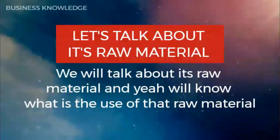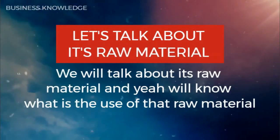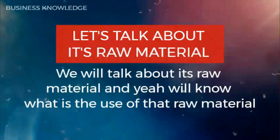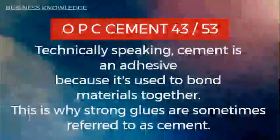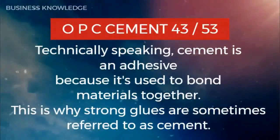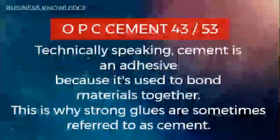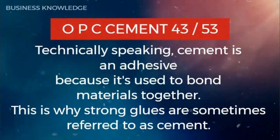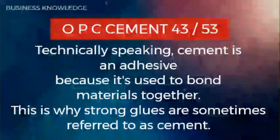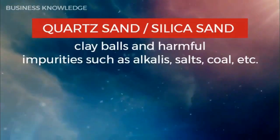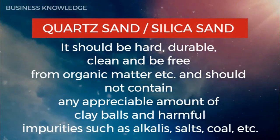Let's talk about its raw materials and what each one is used for. OPC cement — grade 43 or 53. Technically speaking, cement is an adhesive because it's used to bond materials together, which is why strong glues are sometimes referred to as cement. Next, quartz sand or silica sand.